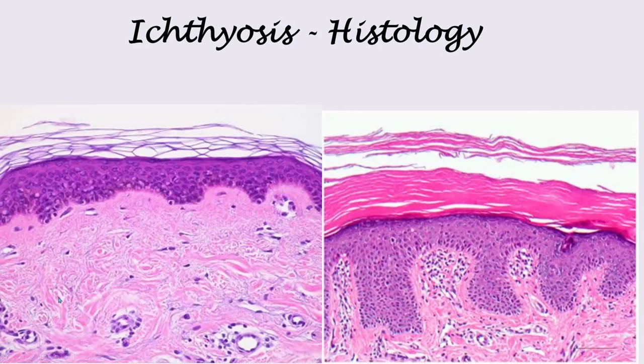On the left side we have the histology slide of normal skin, but on the right is the histology slide of skin with ichthyosis vulgaris. There is hyperkeratosis that happens, which results in a thick layer of keratin on the outermost part of the skin.